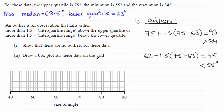Now for part two we've got to draw a box plot for these data on the grid. And when it comes to drawing the box plot it's going to look something like this. We've got the lowest value and we've got the highest value marked on here. The lowest value is 55 and the highest value is 84. And then here we've got the lower quartile which is 63. We've got the upper quartile here which is 75. And in here you've got the median drawn at 68.5. And there's your box plot.